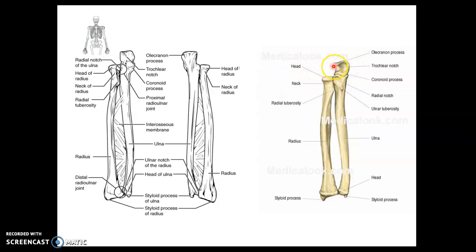The olecranon process is the tip of your elbow. We have a coronoid process as well on the ulna. The radius has a head and a neck and a radial tuberosity. At the distal end, both radius and ulna have styloid processes on either end of the wrist.